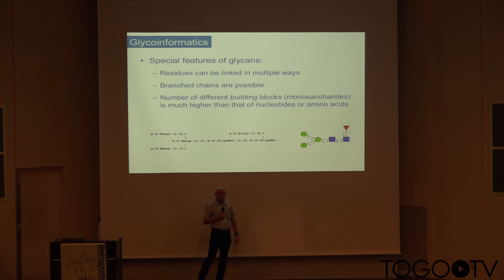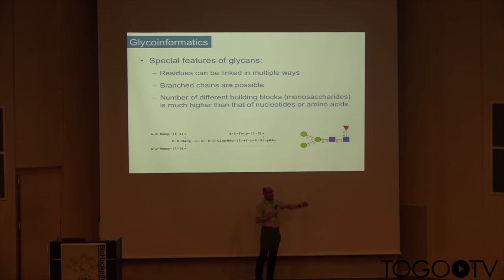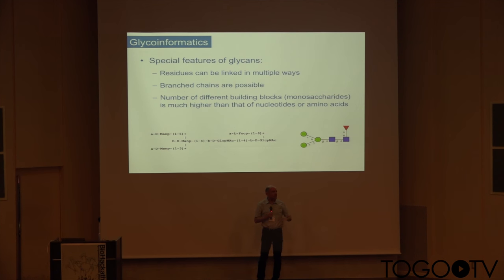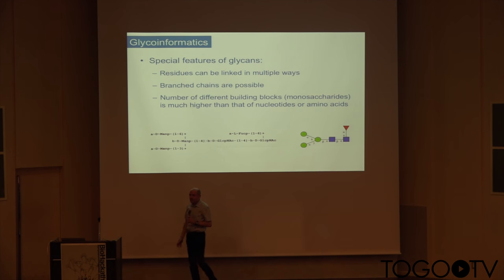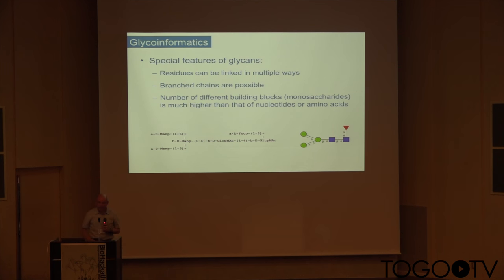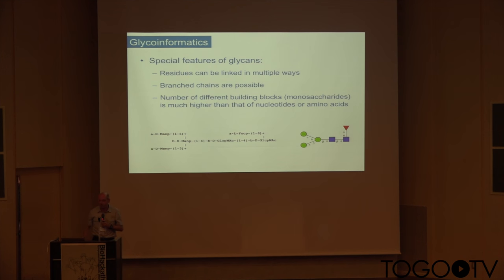Another challenge is representation. In publications you see graphical symbol notations to represent glycans, which are not easy to deal with in databases. Textual implementations are also not easy to store because they are not unique — just interchange a 1,3 and 1,6 linkage and you have a different string.